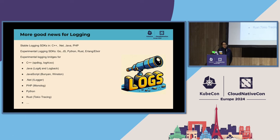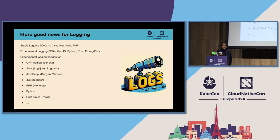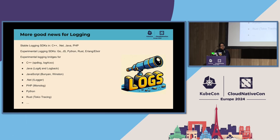Experimental logging SDKs include Go — which is in progress — JavaScript, Python, Rust, and Erlang. There are also experimental logging bridges for C++, because many languages have inherent logging support which OpenTelemetry leverages: Java with Log4j and Logback, JavaScript with Bunyan and Winston, .NET with ILogger, PHP with Monolog, Python, and Rust with Tokio Tracing.